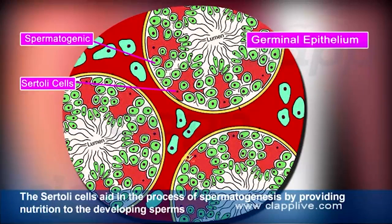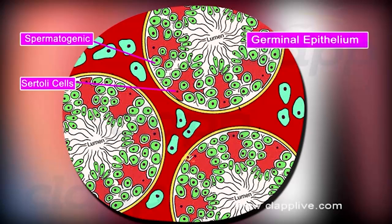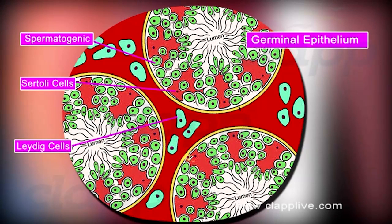Spermatogonia, or the sperm mother cells, produce sperms. Sertoli cells aid in the process of spermatogenesis by providing nutrition to the developing sperms. The interstitial spaces between the seminiferous tubules contain small groups of large polygonal cells termed Leydig cells or interstitial cells. They secrete male hormones called androgens, especially testosterone.